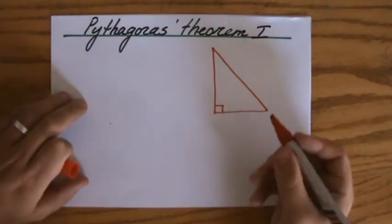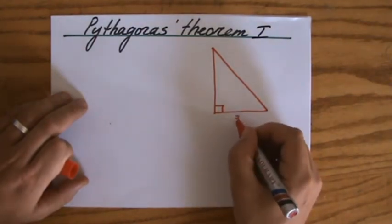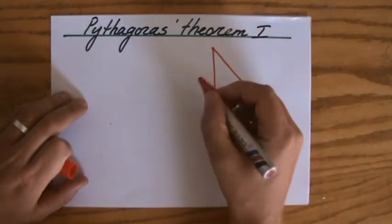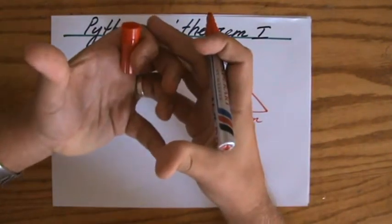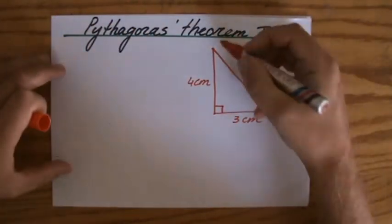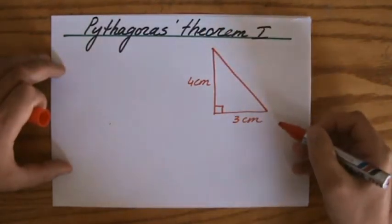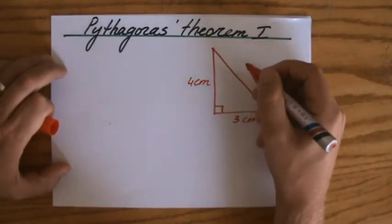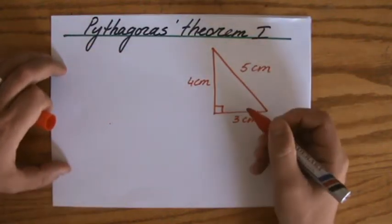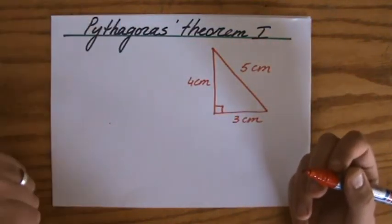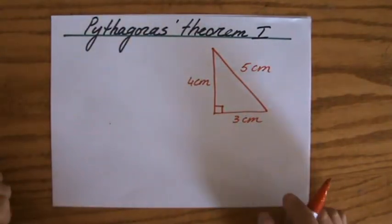So for instance, I know that if this length is 3 centimeters, and if that length is 4 centimeters, then I can use Pythagoras' Theorem to calculate the length of that side. Which is going to give me the answer, and I'll show you later how, of 5 centimeters. And so we're talking about right-angled triangles, and we're calculating lengths.